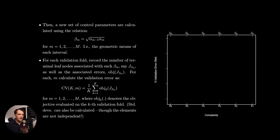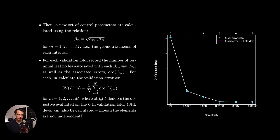For each validation fold, we record the number of terminal leaf nodes associated with each beta m — call it j sub beta m — as well as the associated errors by evaluating the original objective function for that tree specification. For each m, we calculate the validation error as the average over all k folds, and we can also calculate standard deviations to get some idea of variation in those estimates. The validation set is just a proxy for out-of-sample data, and these cross-validation errors evaluated at the sequence of betas are what is reported by the cross-validation tables and plots produced in rpart.